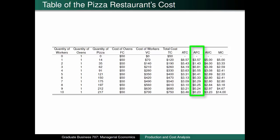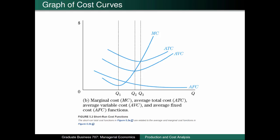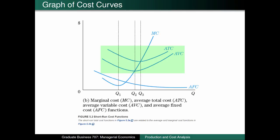Interestingly, average fixed cost is always decreasing in output since fixed cost — which is the numerator in the average fixed cost calculation — stays the same, while quantity of pizzas, which is the denominator, always increases as we progress down the rows of this table. Here is a screenshot of the textbook's graph on the marginal cost (MC) curve, the average total cost (ATC) curve, the average variable cost (AVC) curve, and the average fixed cost (AFC) curve. I like to think of the marginal cost curve as resembling the Nike swoosh, whereas the average total cost curve and average variable cost curves both look like a smile. Finally, the average fixed cost curve is simply downward sloping.